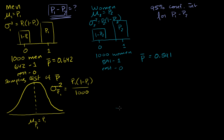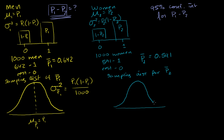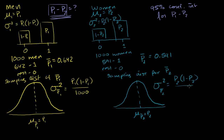And we can do the exact same thing for the women. The sampling distribution of the sample proportion for women has a mean equal to P2 — the mean of the population — and then the variance of this sampling distribution is P2 times 1 minus P2, all divided by n.